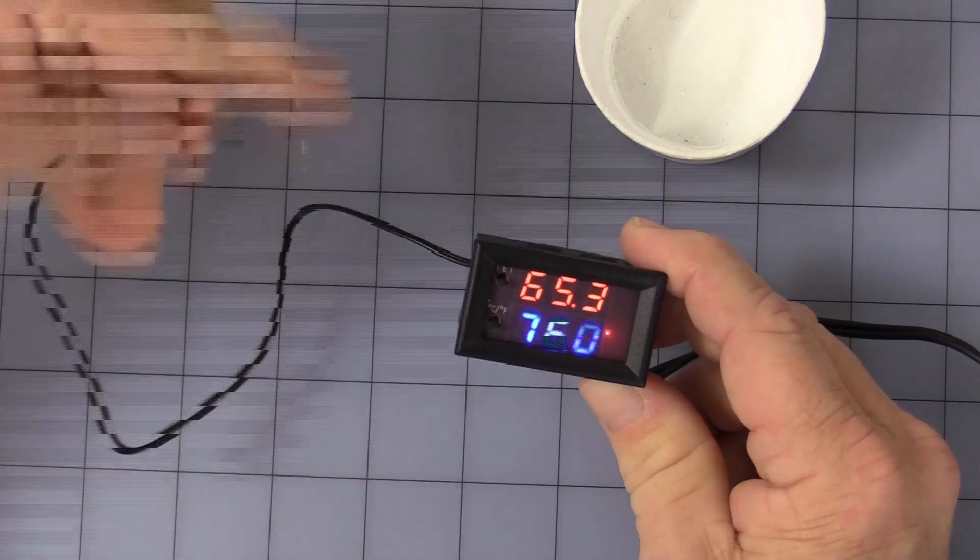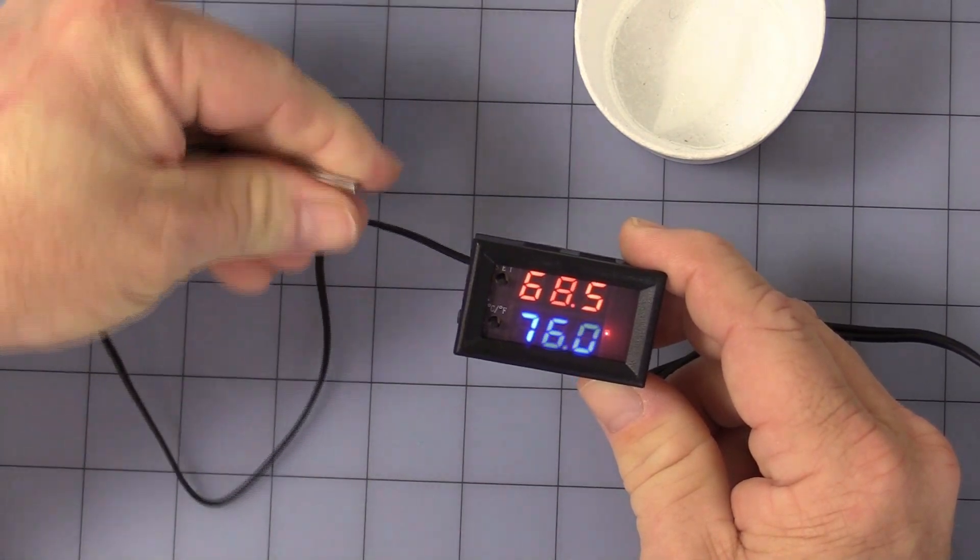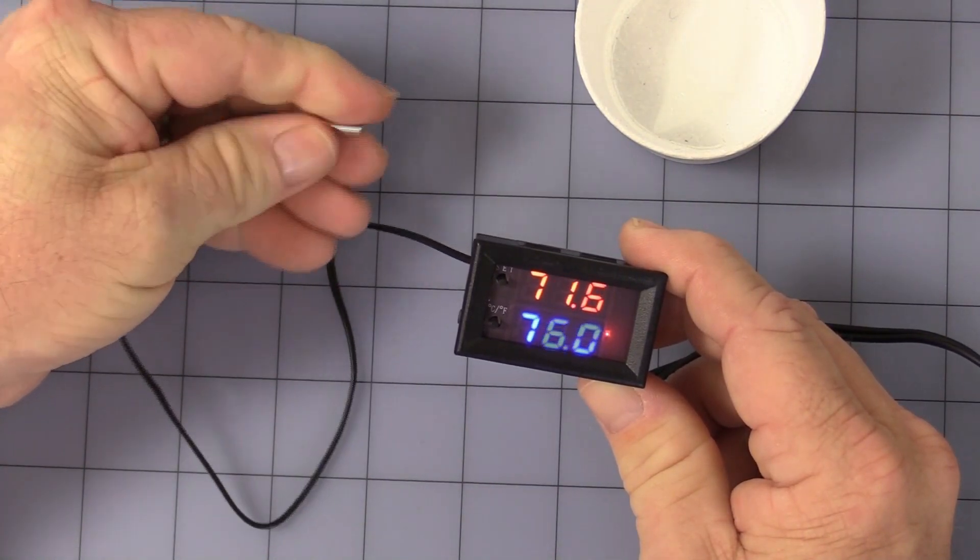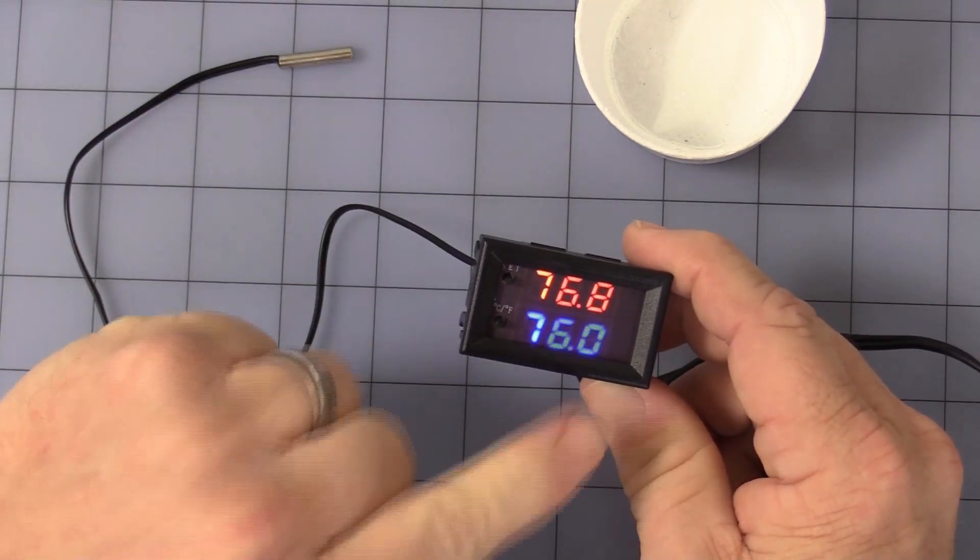Now, we have to get the temperature up to 76 degrees to get the relay to turn off. So, we'll rub the thermostat probe between the fingers. Yep. And the relay turns off.